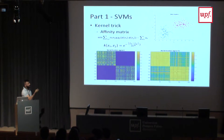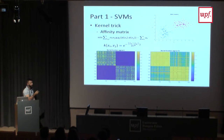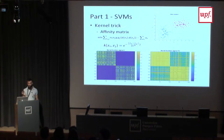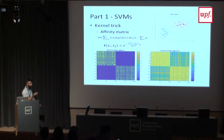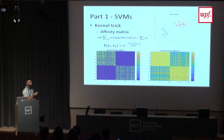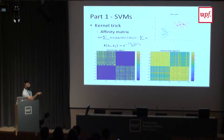The parameter of interest is sigma, which, as you know, describes how spread out your Gaussian distribution is. The higher the sigma, the more spread out your distribution is, and therefore the more similar all the data points will be to one another.